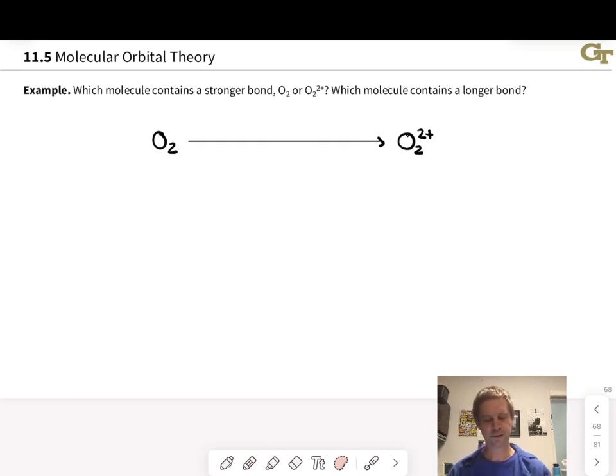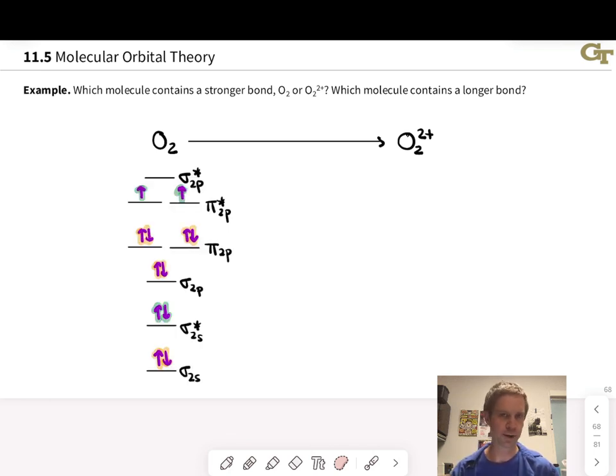In this example problem, we're asked to predict which molecule contains a stronger bond, neutral O2 or the dication O2 2+. We're also asked which molecule contains a longer bond, which is related to our conceptual understanding of what stronger means in terms of bond length. Let's start with the molecular orbital energy diagram of O2 that we've generated previously, and I've gone ahead and highlighted the bonding and antibonding electrons in orange and green, respectively.